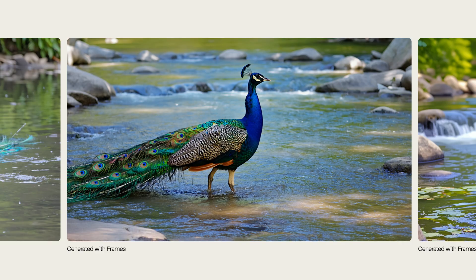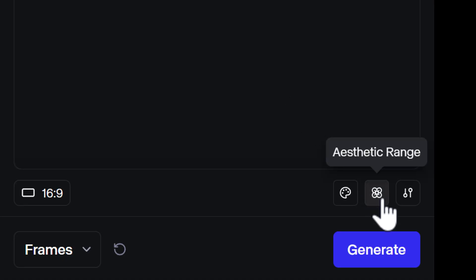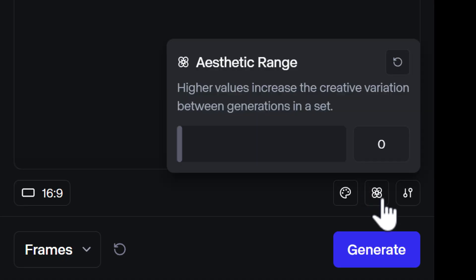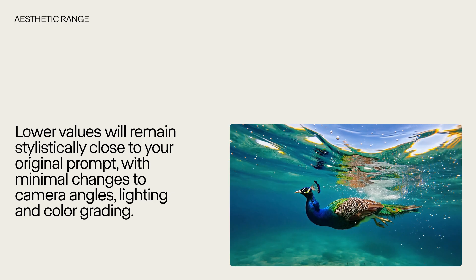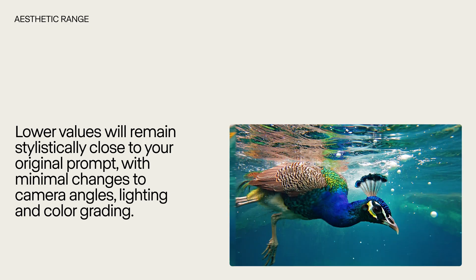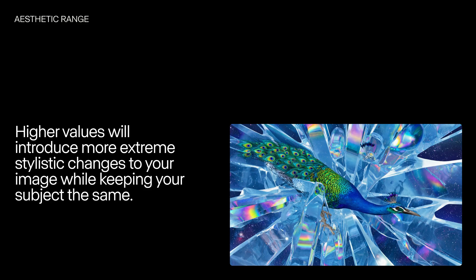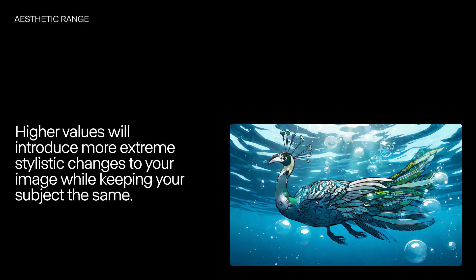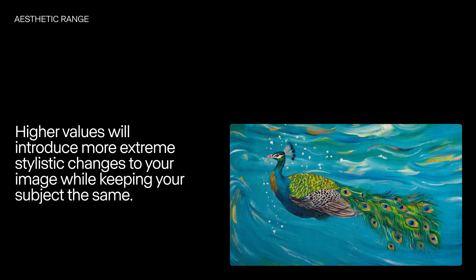You can also opt to experiment with the aesthetic range setting. This allows you to dial up and down the overall creative variation that you'll see across a set of four generations. Lower values will lead to more consistent styles across your set, with subtle changes to things like camera angle, lighting, and color grading. While higher values will result in dramatically different art direction, composition, and aesthetics for your scene, while still representing your subject.